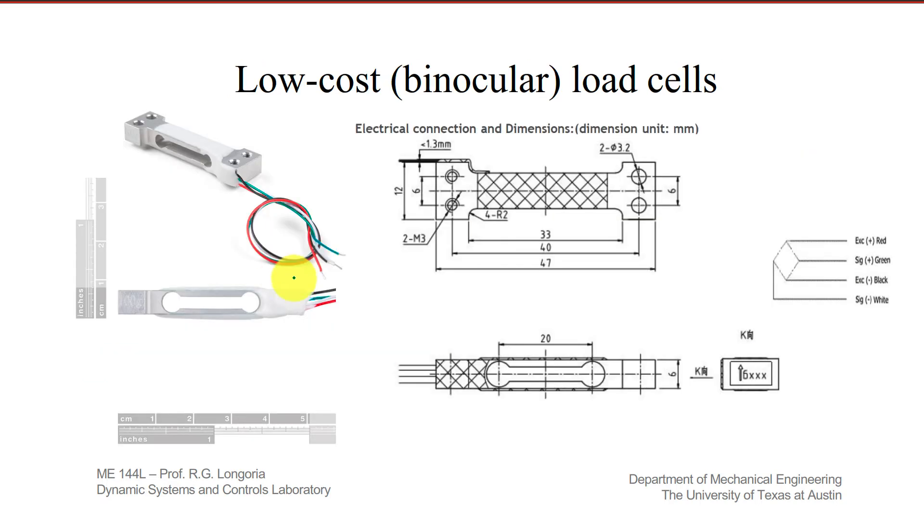And so here's the low cost binocular load. You can find some high grade ones, and this one that I found was only about $10. So I wanted to use a low cost one to see how well they'd work. As you can see, it's got that binocular design, and here are the dimensions in millimeters. And you can see the spec page from the manufacturer, it's configured as a Wheatstone bridge. You've got four gauges on here. I'll show you a little bit more information on this.